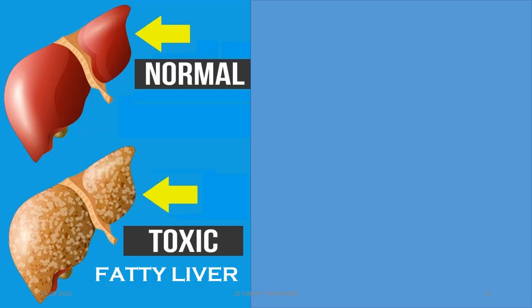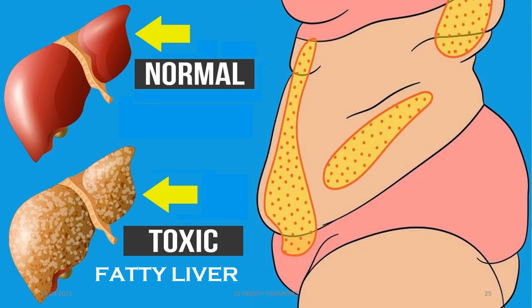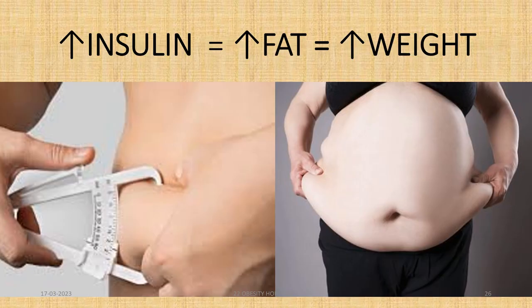The fat made by insulin from excess glucose, excess protein, or dietary oil is first stored in the liver, leading to fatty liver disease. When the fatty liver can no longer store more fat, the excess fat is thrown into the blood and sent to the nearest places for storage — in the viscera, in the abdomen, in and around internal and external organs — and this leads to obesity. Remember: increased levels of insulin means increased levels of fat, which means increased weight gain and obesity.